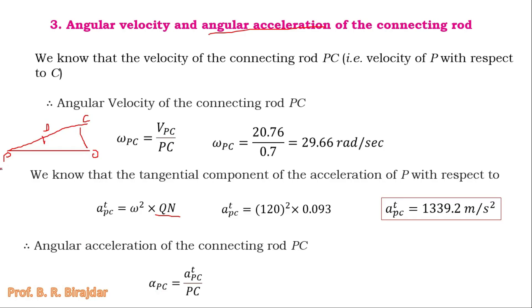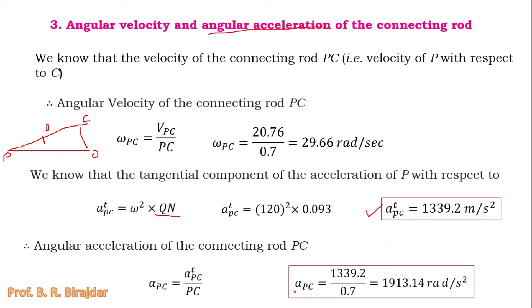Angular acceleration of the connecting rod (alpha PC) equals tangential acceleration of P with respect to C divided by the length PC: 1339.2 / 0.7 = 1913.14 radian per second squared. In this way we can find all the unknowns asked in the problem using Klein's construction — the key is to draw the diagram correctly, then measure and calculate.